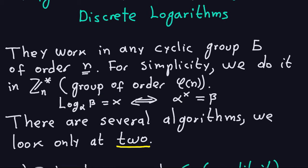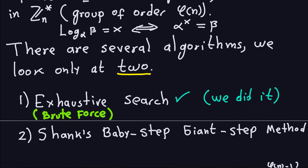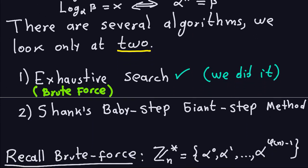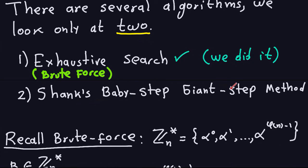There are several algorithms to do that; we're going to see only two because there are many of them — some are probabilistic methods which we're not going to cover here. The first one is the exhaustive search, also called brute force, where you just check all the powers until you get beta. We already did this in the previous videos. The new one we're going to see today is Shanks' baby-step giant-step method, which is a little bit better than exhaustive search, but still doesn't completely solve the problem as it will be very slow for some values of n and alpha.